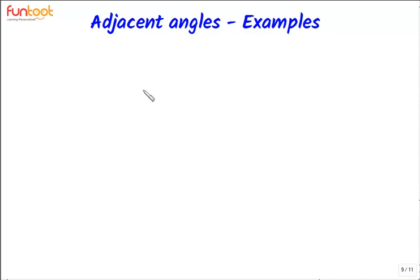We all know about adjacent angles and their properties. Two angles are said to be adjacent if they have a common vertex, a common arm, they do not overlap, and they are in the same plane. Let's look at some examples of adjacent angles now.